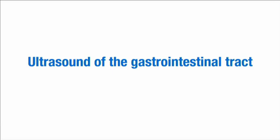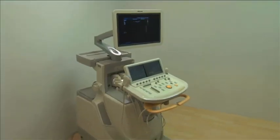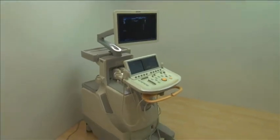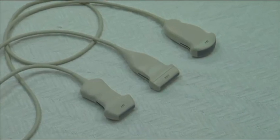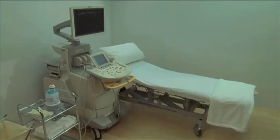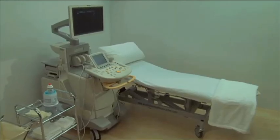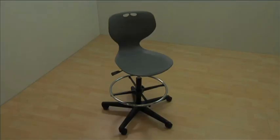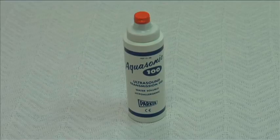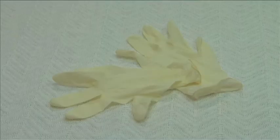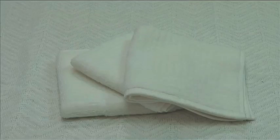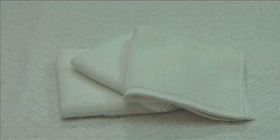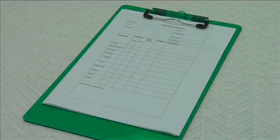Equipment required includes the following: an ultrasound machine, a selection of transducers, an examination table, positioning aids such as wedge sponges or pillows, a chair, acoustic gel, examination gloves, bed linen and towels, and a sonographer's worksheet.